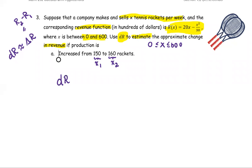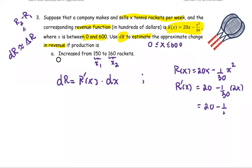To approximate, we use the differential R, which is the derivative of the revenue multiplied by the change in x. Note that R(x) equals 20x minus 1 over 30 times x squared. So then the R prime or the derivative will be 20 minus 1 over 15 times x.